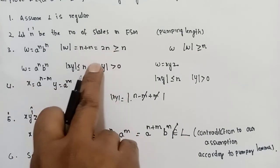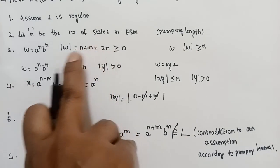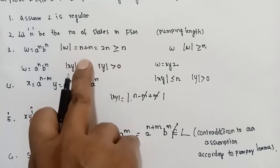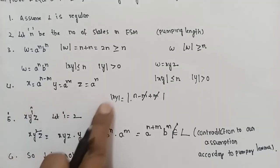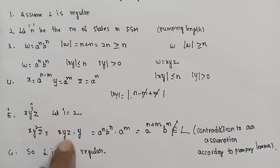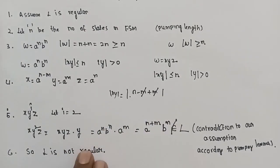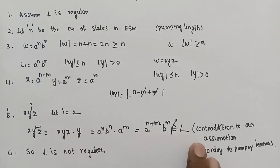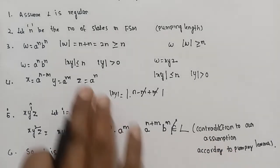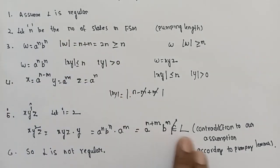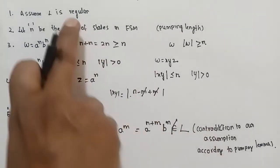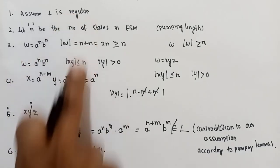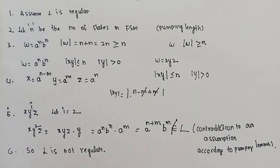The given language is not regular. The length of the chosen word should be greater than the pumping length. This leads to a contradiction — the assumption that L is regular is wrong. Therefore, L is not a regular language.